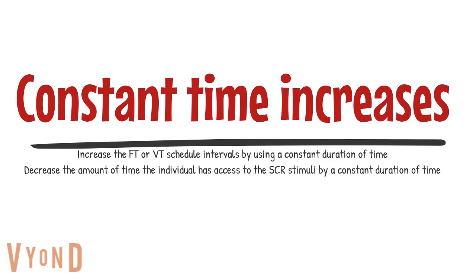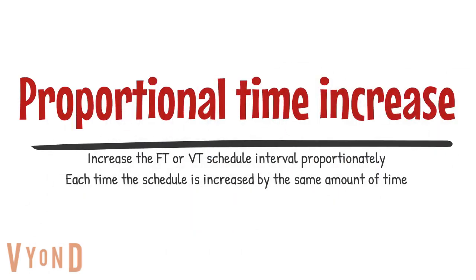In a constant time increase, you increase the fixed or variable time schedule by a constant duration — for example, adding five seconds each time regardless of performance, and decreasing access to the reinforcer by a constant amount. In a proportional time increase, the interval is increased by the same proportion each time. For example, increasing by 5%: if the initial fixed time is 60 seconds, the first increase goes to 90 seconds (5% of 60), and the second increase to 135 seconds (5% of 90).